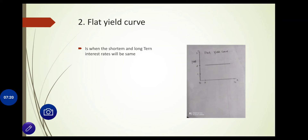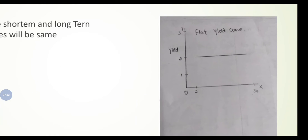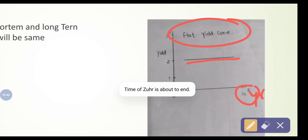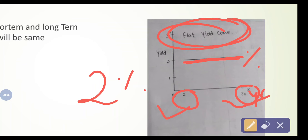Next is the flat yield curve. In the normal yield, short-term interest is lower than long-term. But in a flat yield, both interest rates are the same. For example, whether you invest for 30 years or for just two years, you are getting the same 2% interest. When short-term and long-term interest rates are equal, it is called a flat yield.